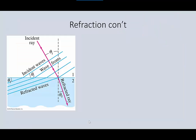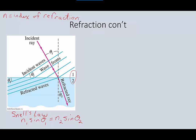This refraction — the bending of light as it goes between media — can be explained by Snell's law. Snell's law says there is a distinct relationship between the incident angle and the refracted angle based on the two media involved. Written out, Snell's law is: N1 sine theta one equals N2 sine theta two. N1 and N2 are characteristic properties of the medium called the index of refraction. It is a ratio of how fast light can travel in the medium compared to how fast it can travel in a vacuum.